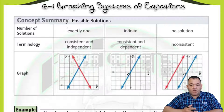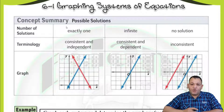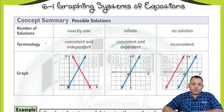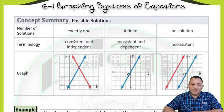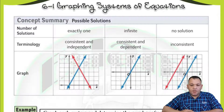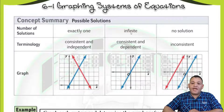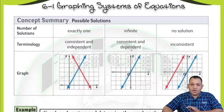Our lesson today is about solving a system formed from two equations. If you have two equations, it means you have two lines. If the two lines intersect at one point, it means we have exactly one solution — this is called consistent and independent. But if the two lines are drawn in the same place, it means we have an infinite number of solutions, which is also called consistent and independent.